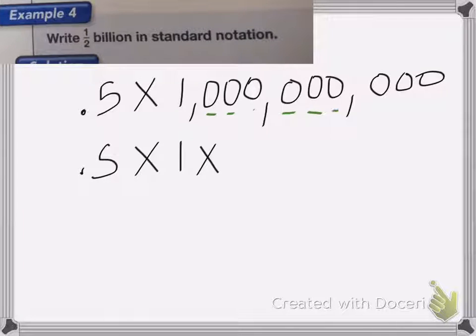Or I could say it's 0.5 times by 1 with nine zeros: 1, 2, 3, 4, 5, 6, 7, 8, 9. Or 10 to the 9th power. So 10 to the 9th power.